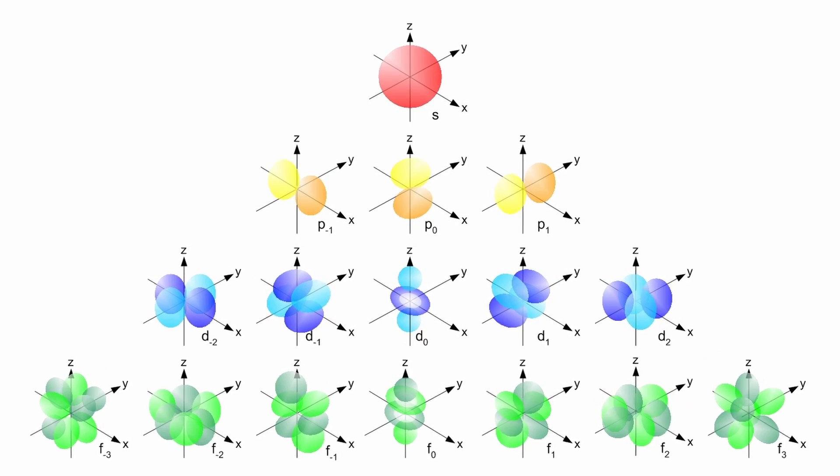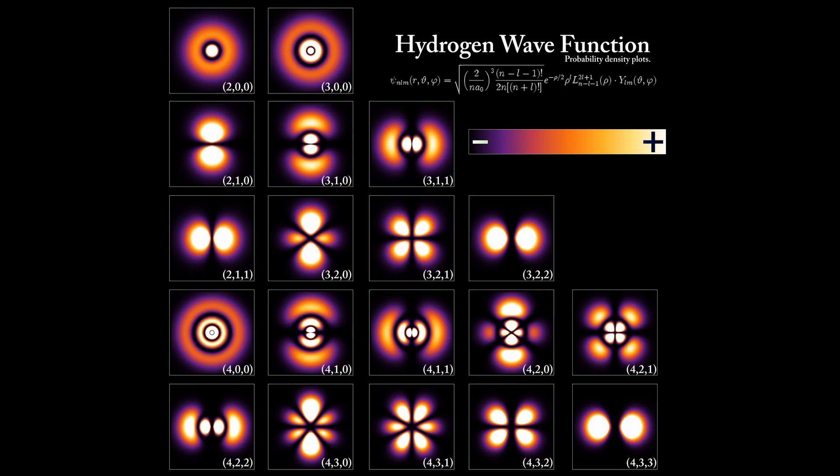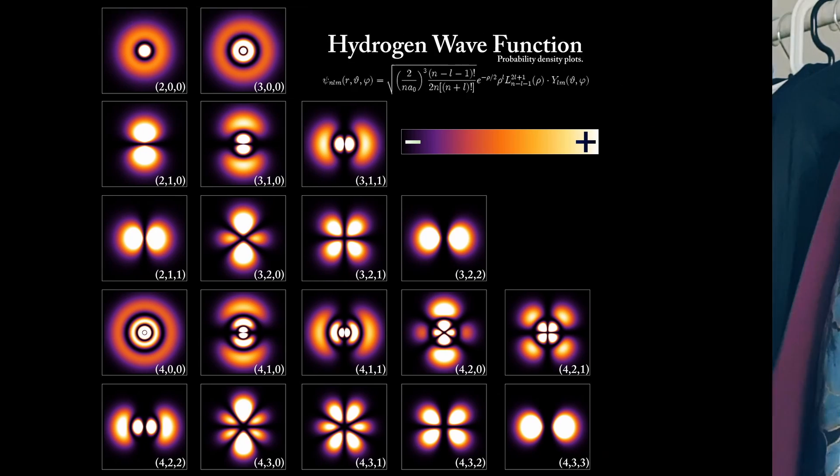We can only solve the Schrödinger equation with exactitude for hydrogen, giving us these beautiful probability density plots. The lighter the color, the higher the probability that the electron can be observed there. As you can see, the middle of each figure is black, because the probability that the electron is in the atom is almost zero — except for s orbitals.